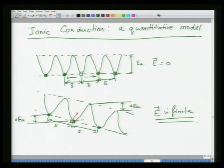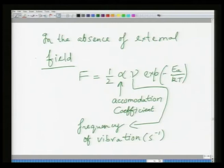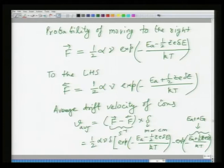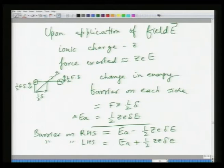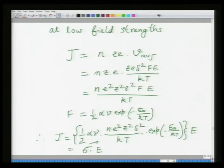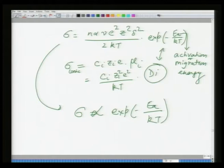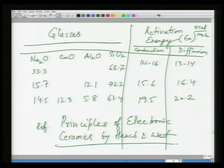As a result of the applied external field, the probability term F gets modified. The probability to move to the right becomes higher compared to moving left, so the carriers or defects acquire an average velocity. This velocity is incorporated into the expression for current density, giving j = sigma*E. From this, sigma is a pre-exponential factor multiplied by exp(−E_a / kT), very similar to the expression derived from diffusivity. These two expressions being similar confirms the model is correct, which can be further verified experimentally.